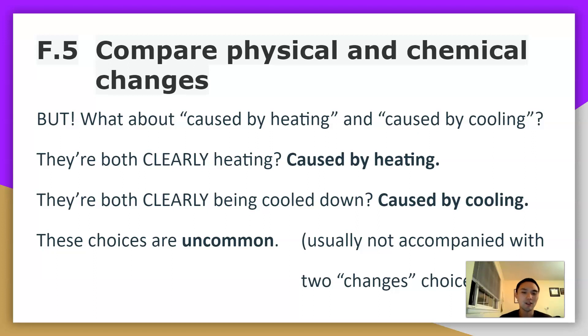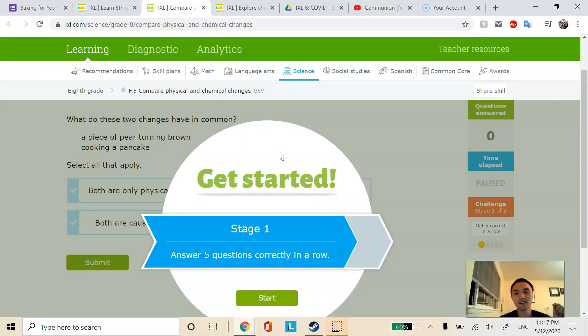It's also usually not accompanied with two changes choices, which means it won't say like both are physical changes, both are chemical changes, typically in the answer choice. And if I see an example of that, we'll go over that there. All right. So let's get this started.